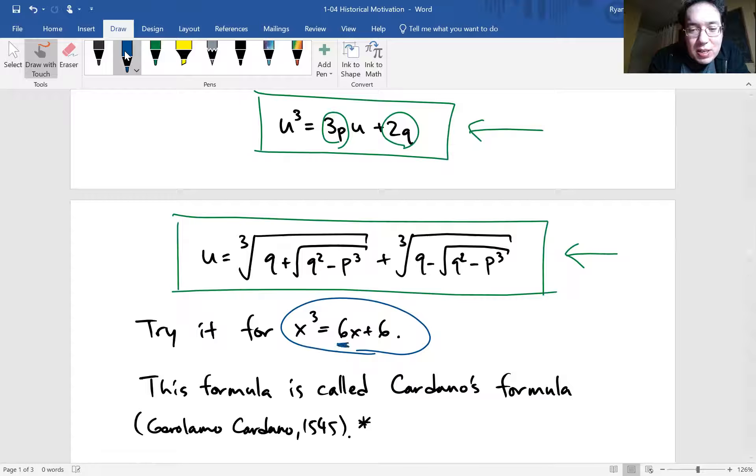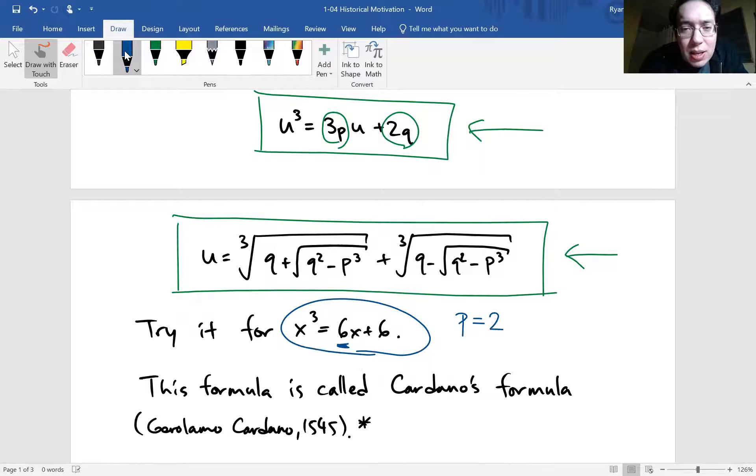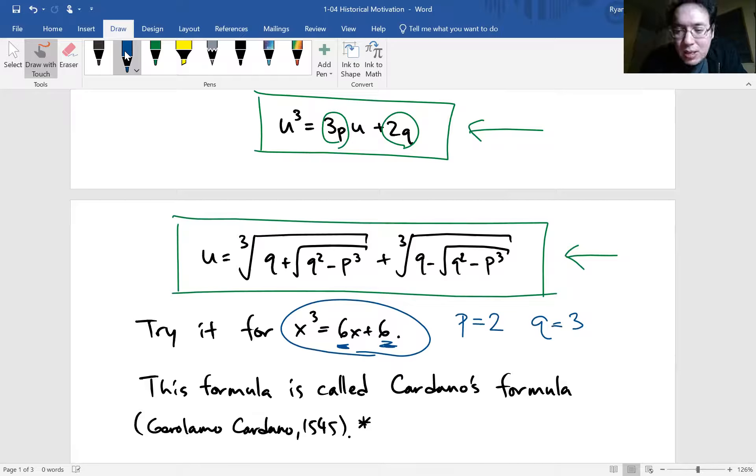So let's see. The coefficient of x is 6. So that means p is equal to 2. And the constant term is 6. So if you divide that by 2, q is equal to 3. So if you can figure out p and q, you can type it in to this formula. And then you get the solution.